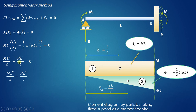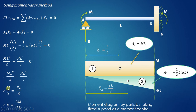Transferring the negative term to the right-hand side makes it positive. Canceling L squared, we get M·L/2 equals R·L squared/3. Cross-multiplying by 3 and dividing by 2L gives the reaction R equals 3M upon 2L. In this way we can find out the reaction using the moment area method for a propped cantilever beam. Thank you very much for watching.